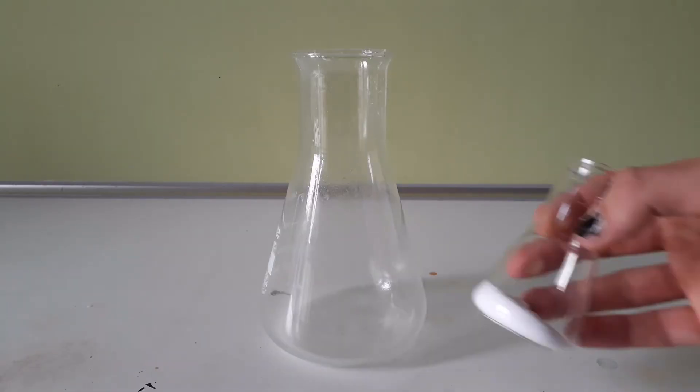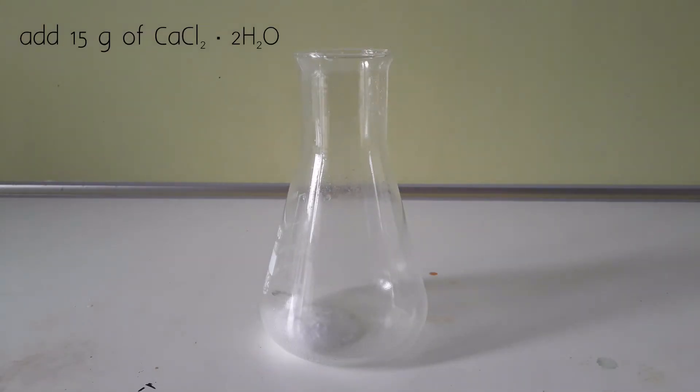To start off, I add 15 grams of calcium chloride dihydrate to an Erlenmeyer flask. This is followed by the addition of 85 grams of 6% hydrogen peroxide solution. This is then placed outside to cool down to about 2 degrees Celsius.